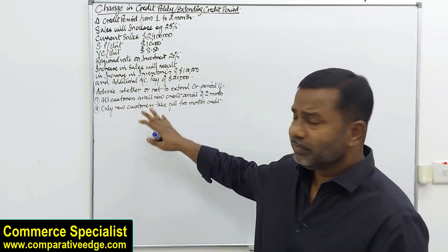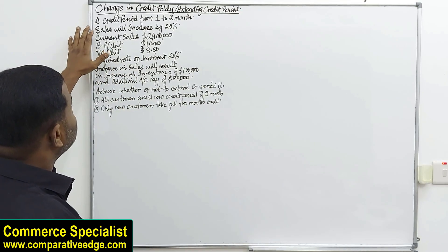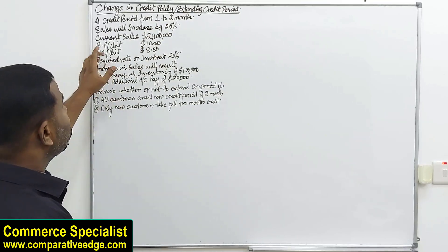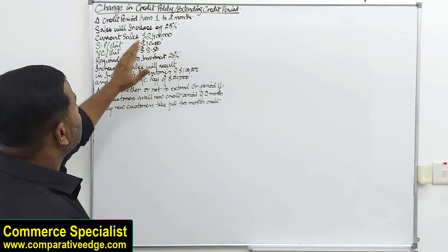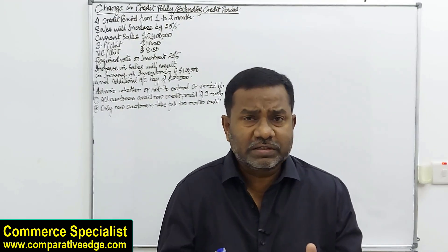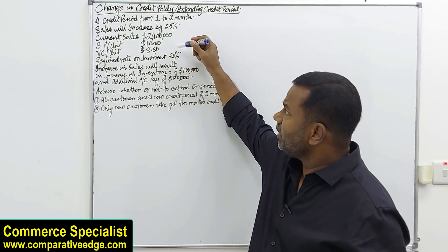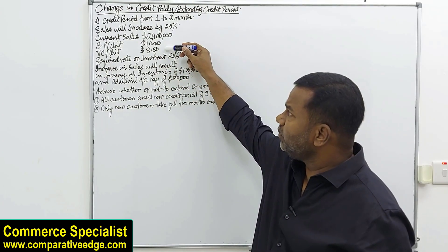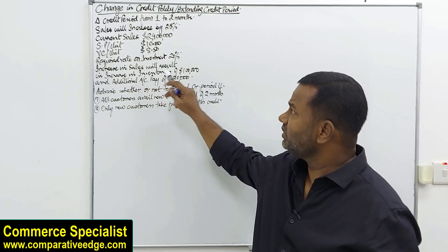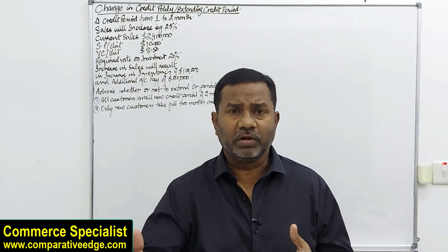Here I have a question with some important details. The change in credit period we are considering is from one month to two months. When we increase the credit period, sales will increase by 25%. Existing sales is 2.4 million, selling price per unit is $10, variable cost per unit is $8.50, required rate of return on investment is 20%, increase in sales will result in an increase in inventories of $100,000 and additional accounts payable of $20,000.